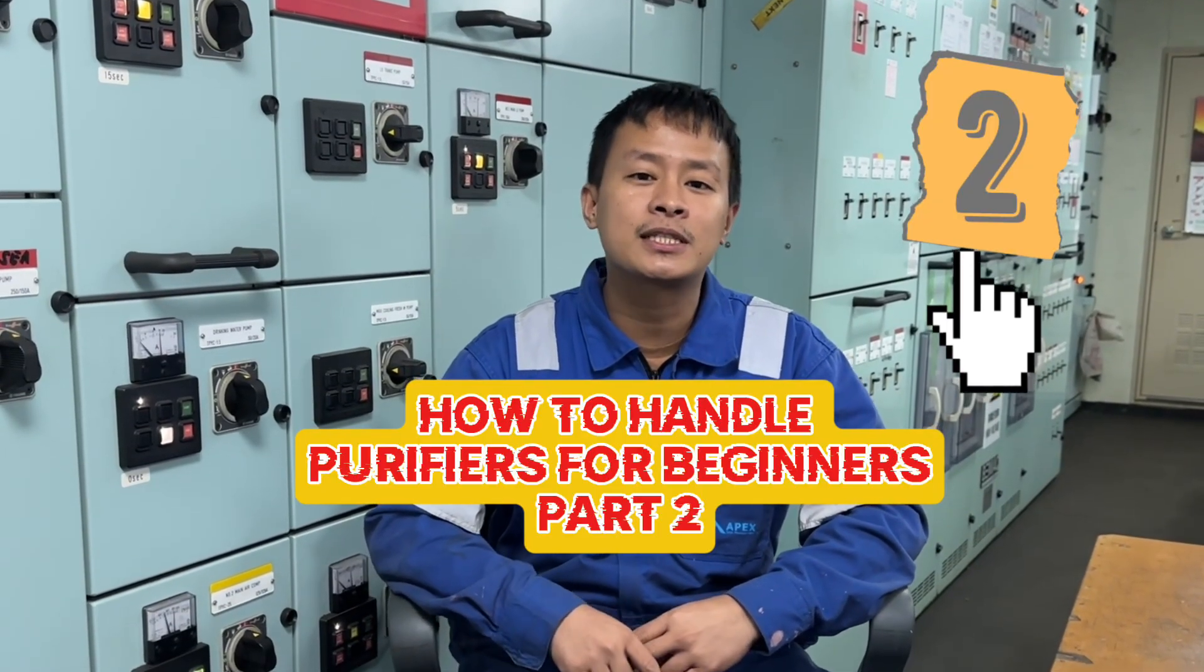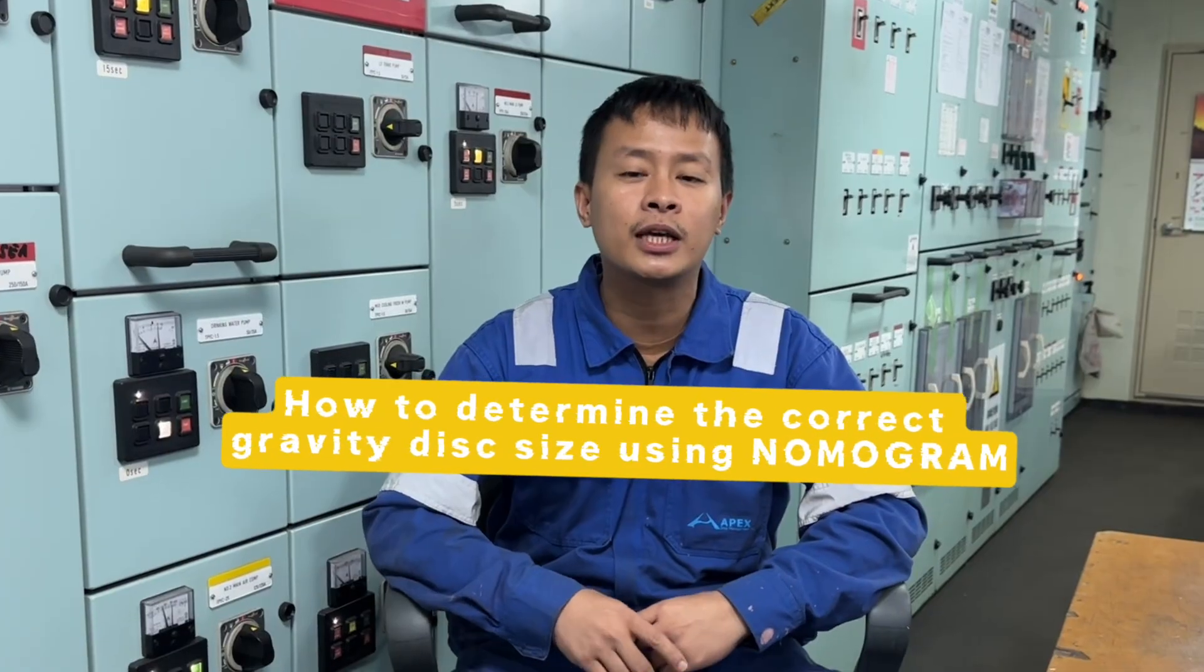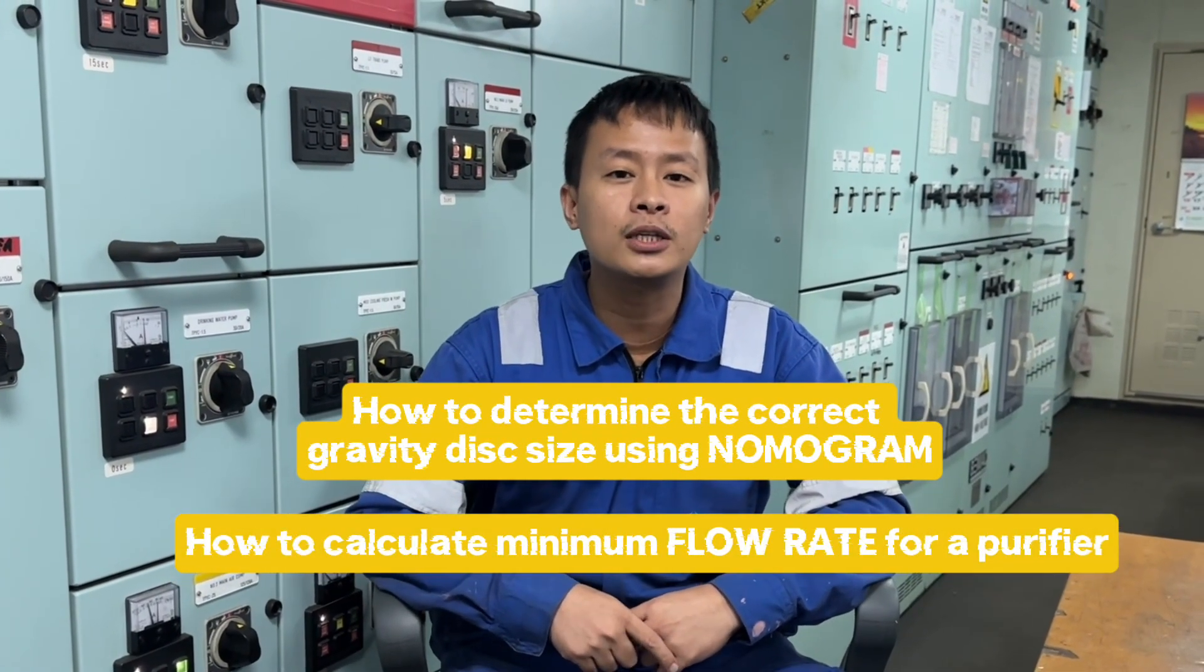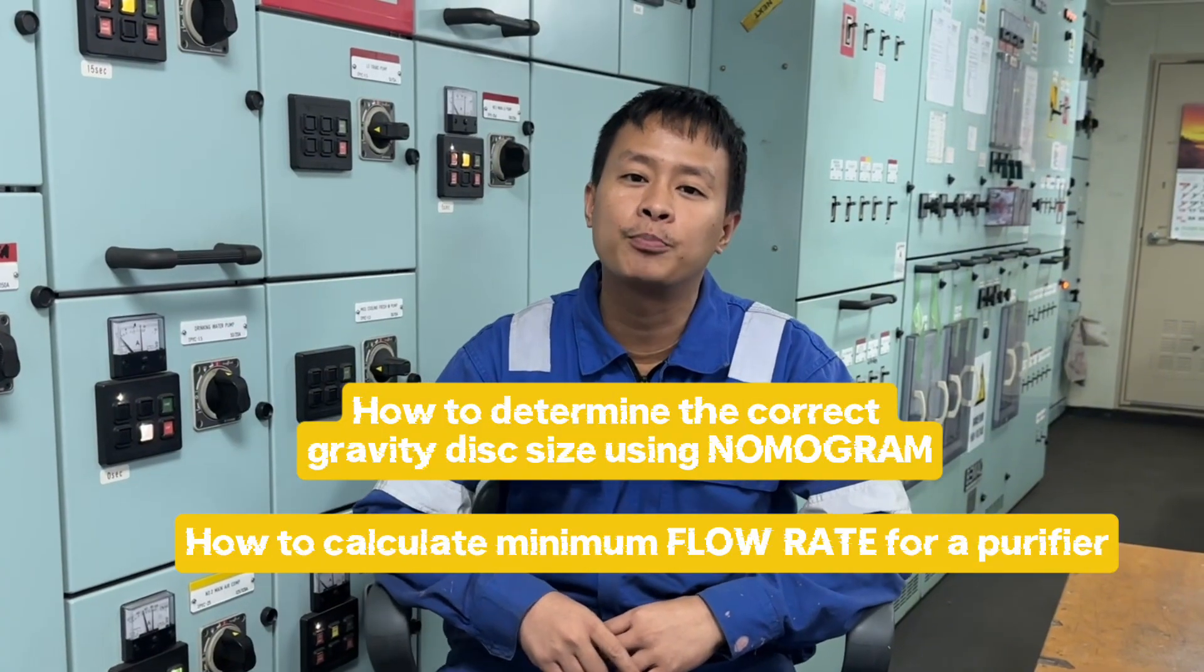This time, I'll be discussing how to determine the correct gravity disk size using nomogram and how to calculate minimum flow rate for a purifier.